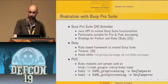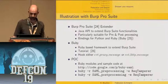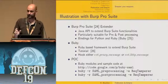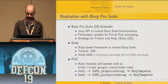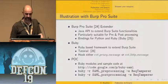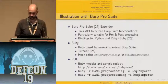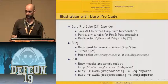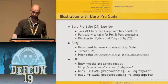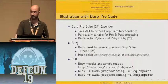To implement this, I've been using Burp ProSuite — which most of you know — it has a very good cost-benefit ratio. What's really interesting is that it provides a Java API to extend Burp functionality, particularly suitable for pre- and post-processing. There also exist bindings for Python and Ruby. I've been using the Ruby framework to extend Burp, which is called BiBi. A complete tutorial is available online. For this kind of tool, you only need to hook either the proxy message event or the HTTP message event. The proof of concept I developed is freely available at the provided URL.